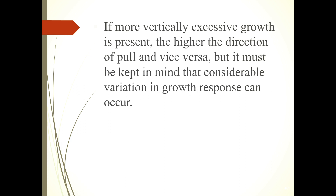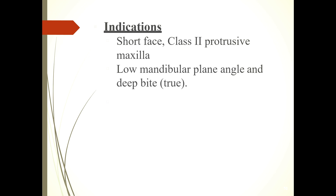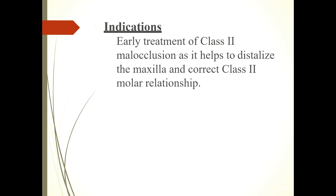Cervical pull headgear: This extra-oral pull is generally applied bilaterally for three main purposes: 1. As a restraining force, 2. As a retracting force, 3. As a supplementary force. Indications: Short face, class 2 protrusive maxilla; low mandibular plane angle and deep bite; early treatment of class 2 malocclusion, as it helps to distalize the maxilla and correct class 2 molar relationship.